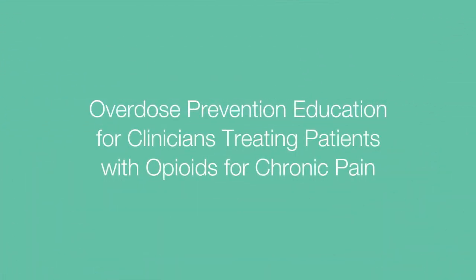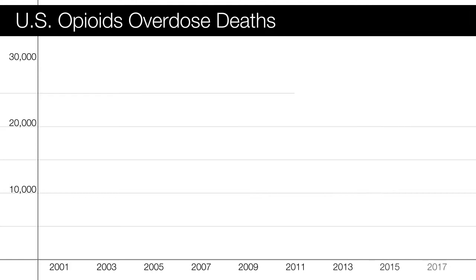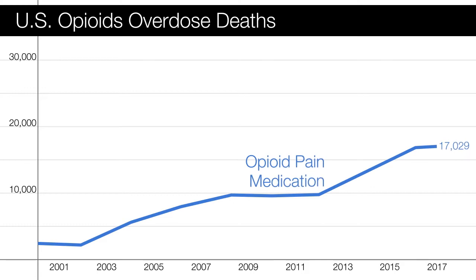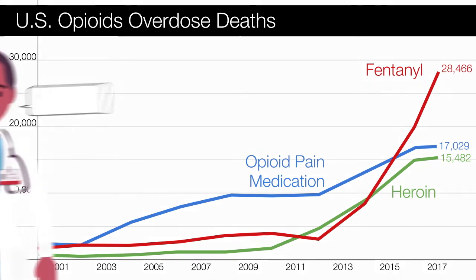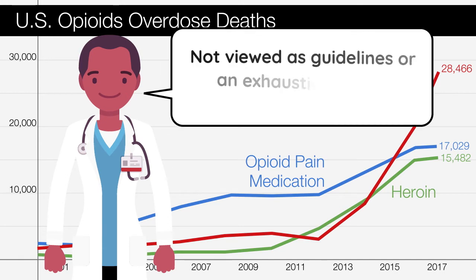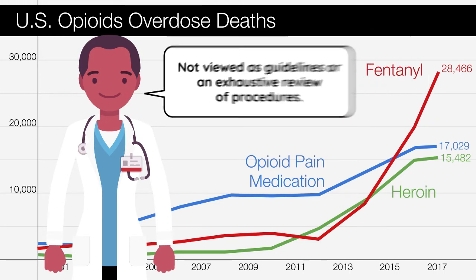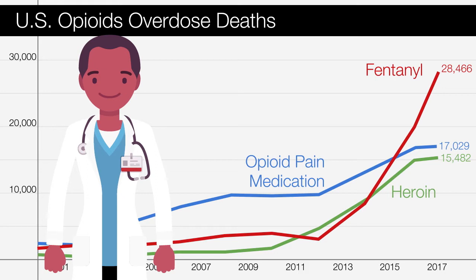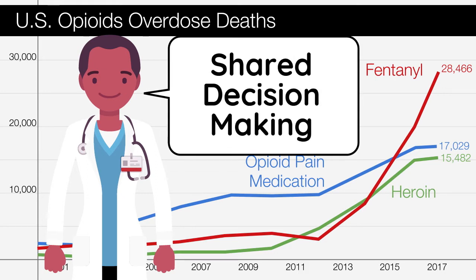This video discusses overdose prevention for clinicians treating patients with opioids for chronic pain. The opioid overdose death rate in the United States has more than doubled over the last decade, driven by the increased use of opioid pain medications as well as the use of illicit opioids like heroin and fentanyl. This video highlights key points and strategies for opioid overdose prevention and should not be viewed as guidelines or an exhaustive review of procedures. A key to success for opioid overdose prevention is shared decision-making in patient-centered care, which is a dynamic give-and-take process.